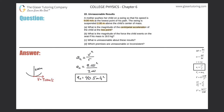That takes care of letter A. Moving on to letter B: What is the magnitude of the force the child exerts on the seat if his mass is 18 kilograms? Let's look at a free body diagram. The child has a certain weight pointing straight down. Not only does the child have weight, but there is also a centripetal force produced by the swing because it has a centripetal acceleration. It's a circular path with a velocity and radius, and therefore it produces a net centripetal force.